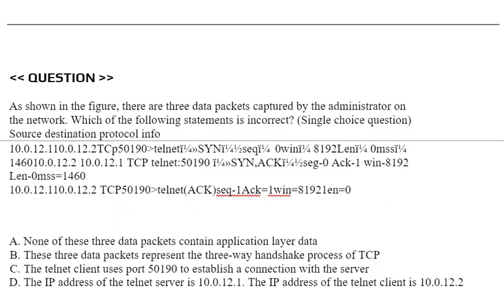Question: There are three data packets captured by the administrator on the network. Which of the following statements is incorrect? See the source, destination, and protocol information. Option A: None of these three data packets contain application layer data. Option B: These three data packets represent the three-way handshake process of TCP.